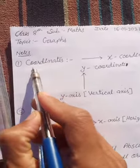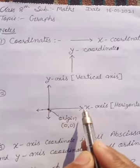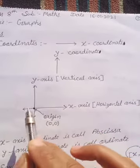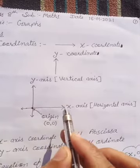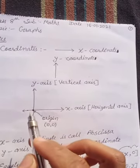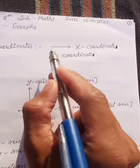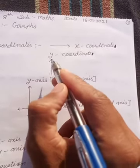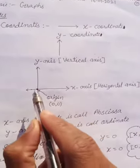First, coordinates. You know about the x-axis — its other name is horizontal axis. And y-axis means vertical axis. So any points on the x-axis will be x-coordinates, and any points located on the y-axis will be y-coordinates. The horizontal axis gives x-coordinates and the vertical axis gives y-coordinates.